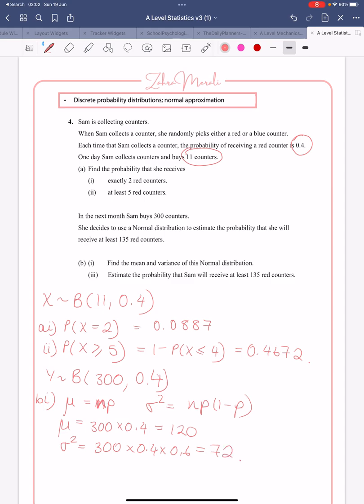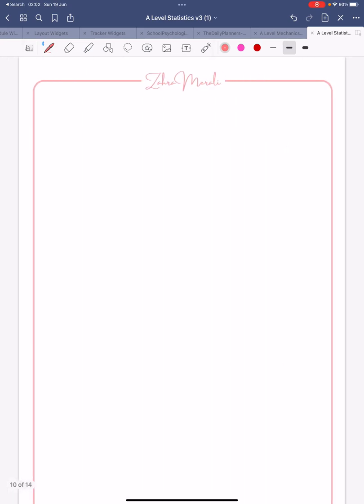And we want to find out, she's going to receive at least 135. So remember, at least, so let's put that there. So we want to estimate the probability our new Y is at least, so greater than or equal to 135. Now, we have to do what's called continuity correct.